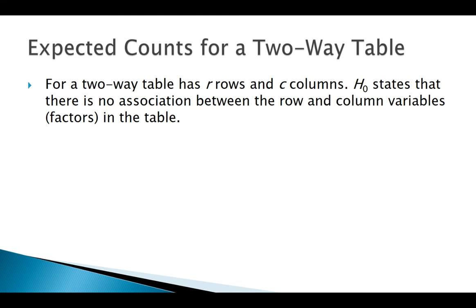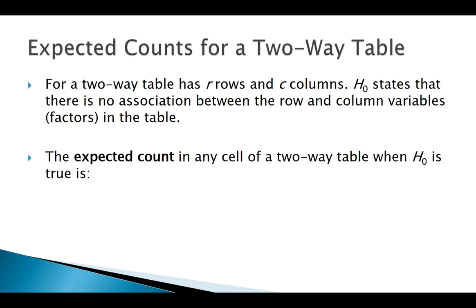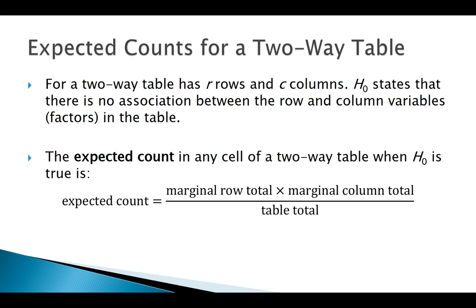Remember, our null hypothesis is that there is no association. So here's how we calculate our expected counts: we take the marginal row total, multiply by the marginal column total, and divide by the overall total. That's the easiest way to find the expected counts for a two-way table.